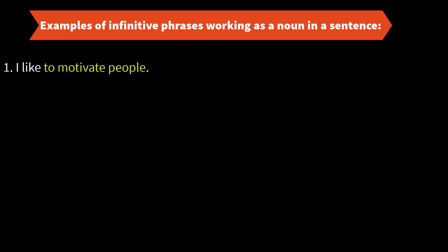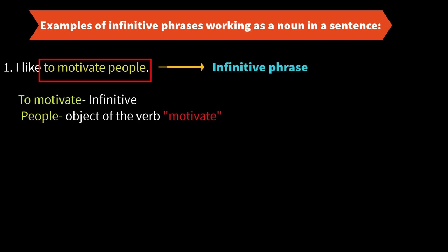I like to motivate people. In this example, the infinitive phrase is 'to motivate people.' 'To motivate' is the infinitive and 'people' is the object of the verb 'motivate.' You always like something — I like you, I like my friend, I like this country. So 'to motivate people' is working as a noun here, as the object of the verb 'like.' I like what? To motivate people.